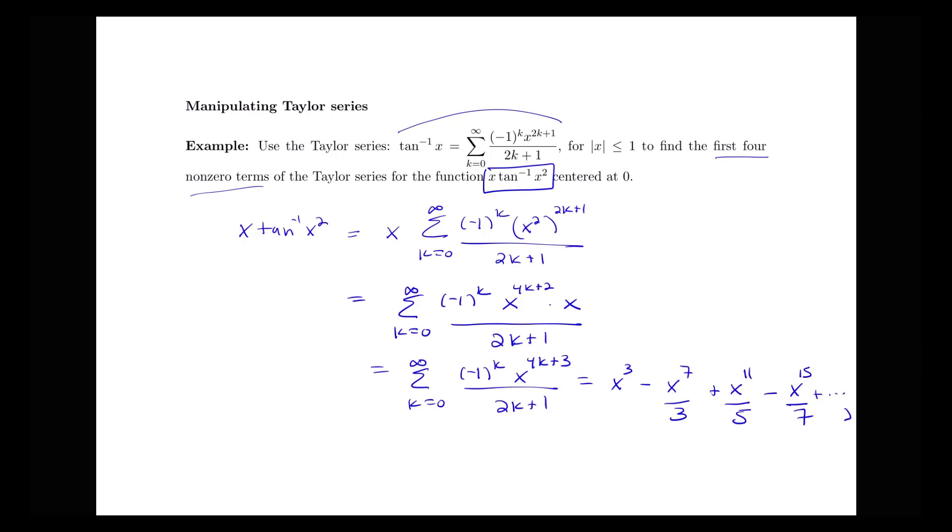And we can also see here that this is still going to be converging for the absolute value of x less than or equal to 1 since we substituted x squared there for x. So for absolute value of x less than or equal to 1, I'm still going to have this absolute value of x squared here less than or equal to 1, which is going to mean my x here still less than or equal to 1.